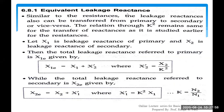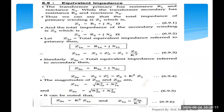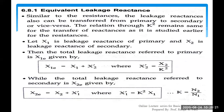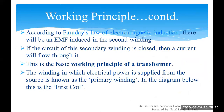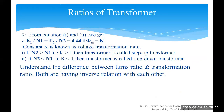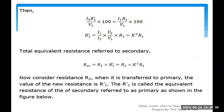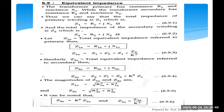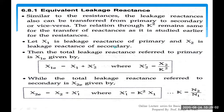In the numericals they will popularly ask you to calculate leakage reactance referred from the primary side given X1 and X2 values and the turns ratio. There is one more term: total impedance, where impedance equals resistance plus reactance. The total equivalent impedance on the primary side is ZeP = ReP + jXeP, and similarly on the secondary side it is R + jX.